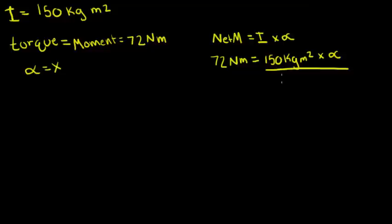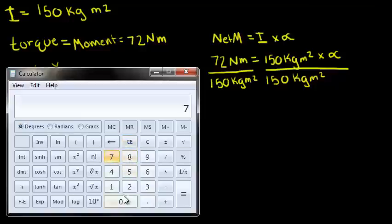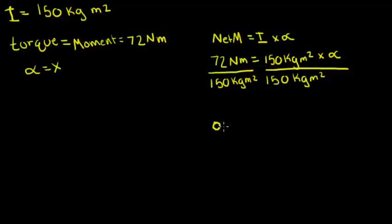We're going to do a little bit of algebra to solve for angular acceleration. And we will plug this into our calculator. Our answer is 0.48 radians over seconds squared. This is our angular acceleration.